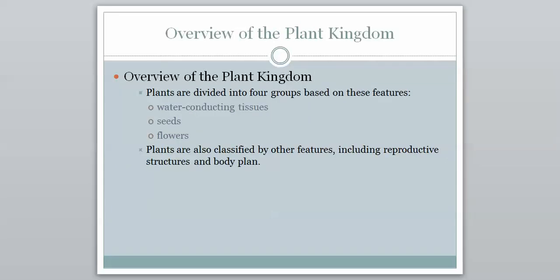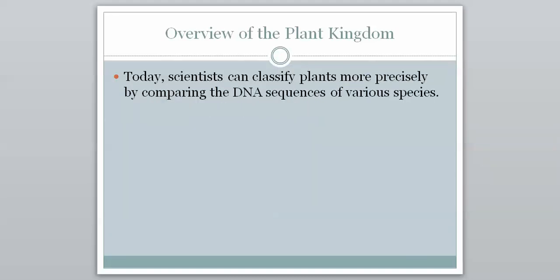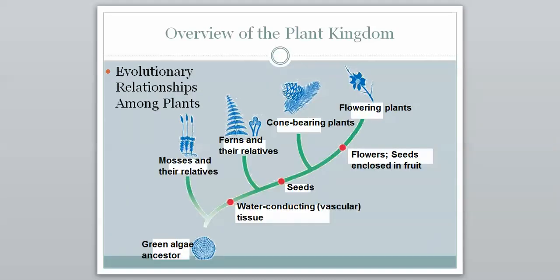Here is an overview of what the plant kingdom looks like. Plants are divided into four groups based on these features: the type of water-conducting tissues they have, whether or not they have seeds or the types of seeds, and whether or not they have flowers or the types of flowers. Plants are also classified by other features including reproductive structure and body plan, but those three are going to be our most prevalent.